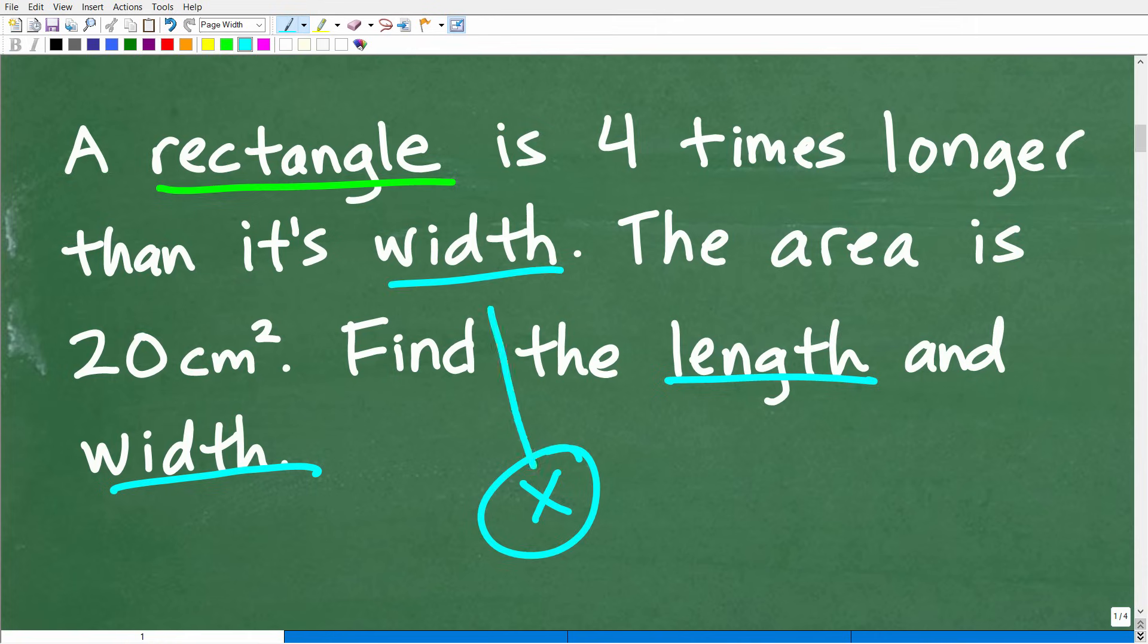Now, before I show you this little rectangle, we need to kind of use a variable here because we have an unknown value. So we're trying to determine the length and the width, but there's a relationship between the length and the width. So we have to establish some variable. I'll use the variable X. And let's make this easy on ourselves. Let's let the width be equal to this variable X.